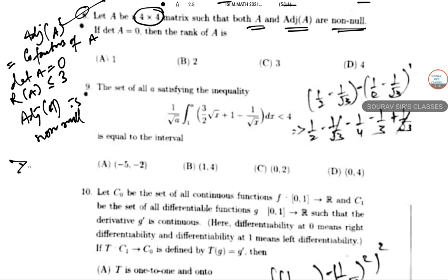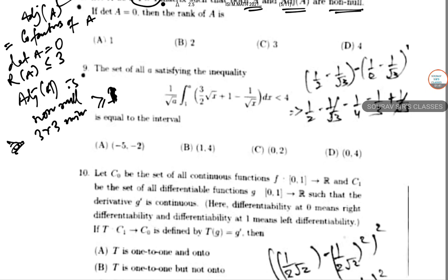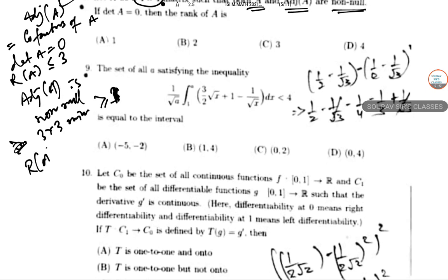And greater than 3 cross 3 minors will be there, and that will be greater than or equal to 1. At least 1 will be there, and as a result of that, rank of A is greater than or equal to 3.